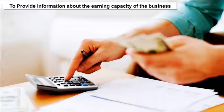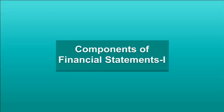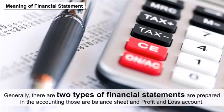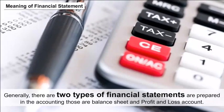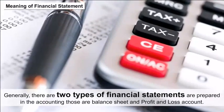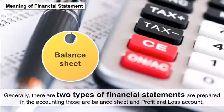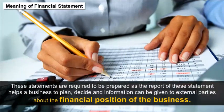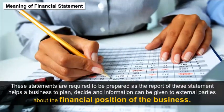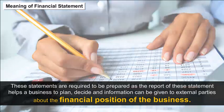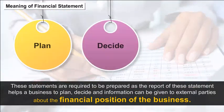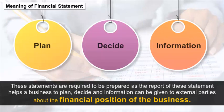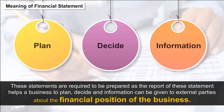Components of financial statements. Generally, there are two types of financial statements that are prepared in accounting: the balance sheet and the profit and loss account. These statements are required to be prepared as the report helps a business to plan and decide, and information can be given to external parties about the financial position of the business.